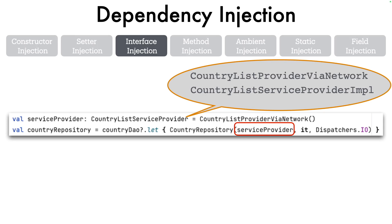Now what we want to do is, depending upon certain conditions, we want to use either one of these two flavors of the list service provider. In this case, we can't use the constructor because we want to change it, but we also can't use a simple setter. So we want a little bit more flexibility when it comes to passing the dependencies depending upon certain conditions. That is where interface injection comes into picture.